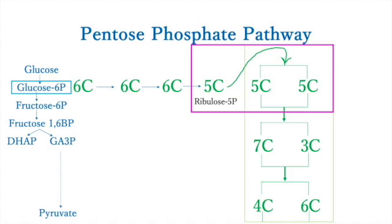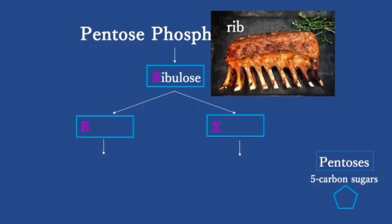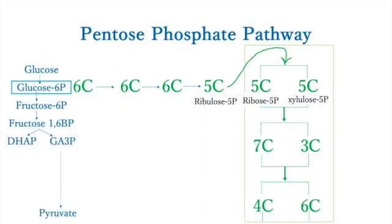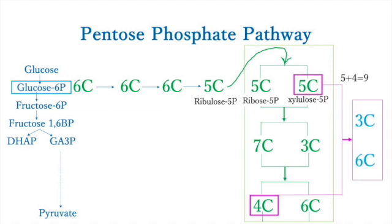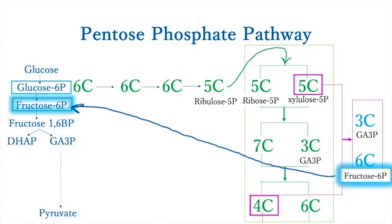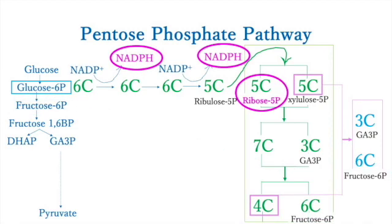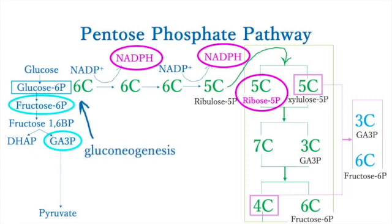The intermediates include ribulose, ribose, and xylulose. In the last reaction, 5-carbon and 4-carbon molecules are used: 5 plus 4 equals 9, and 3 plus 6 equals 9. The products are glyceraldehyde-3-phosphate (G3P) and fructose-6-phosphate. If the cell needs more NADPH or ribose-5-phosphate, it goes back to the gluconeogenesis pathway.